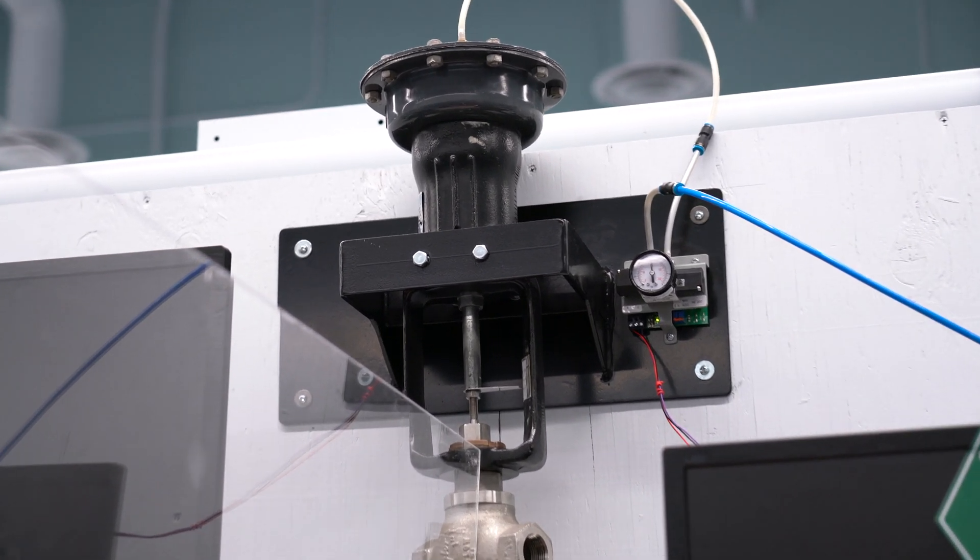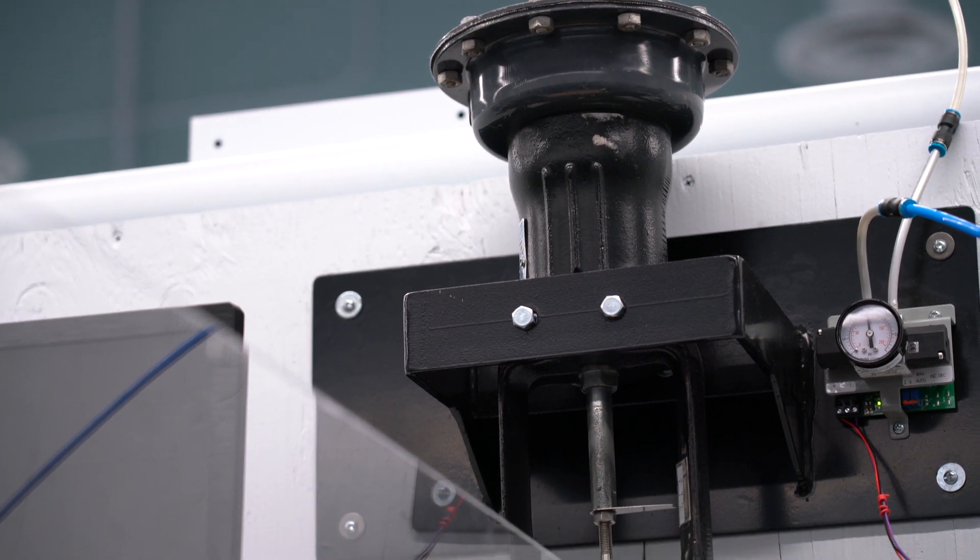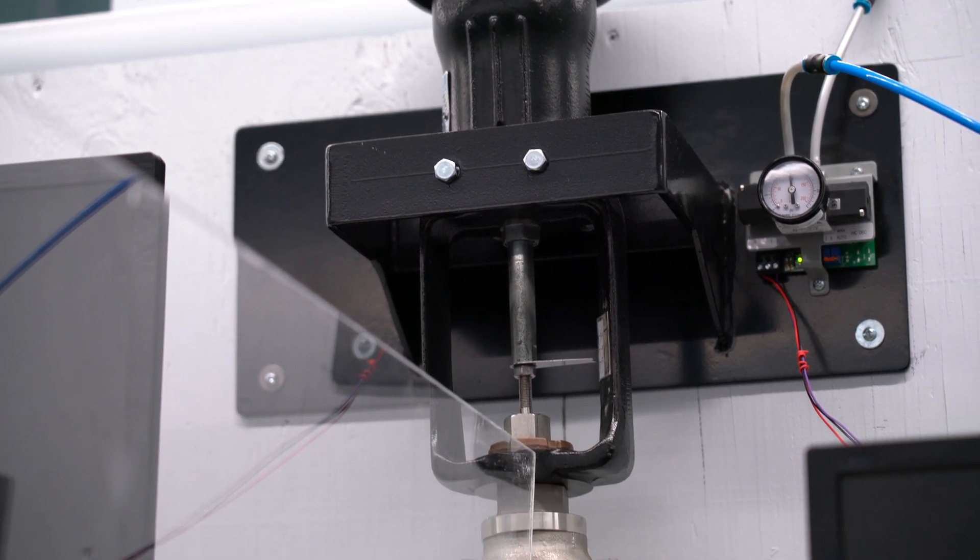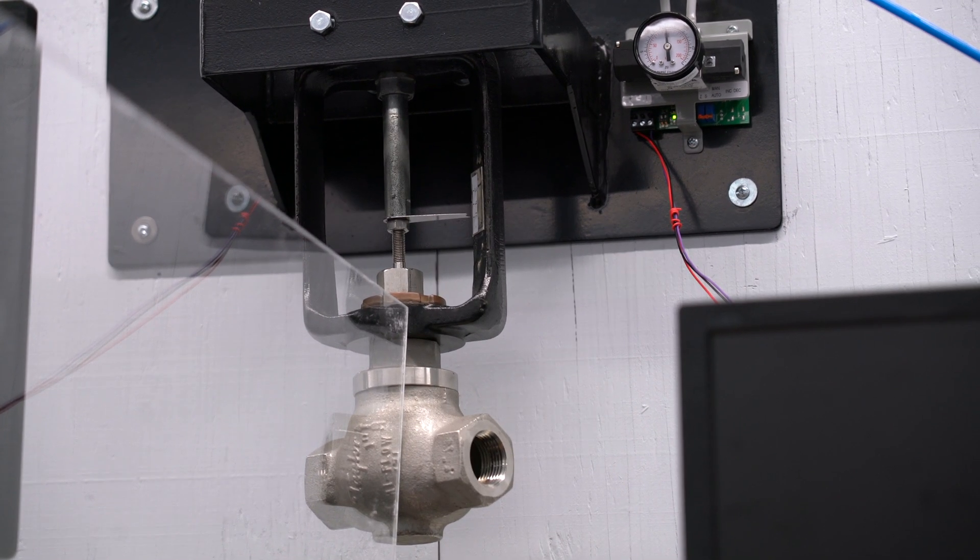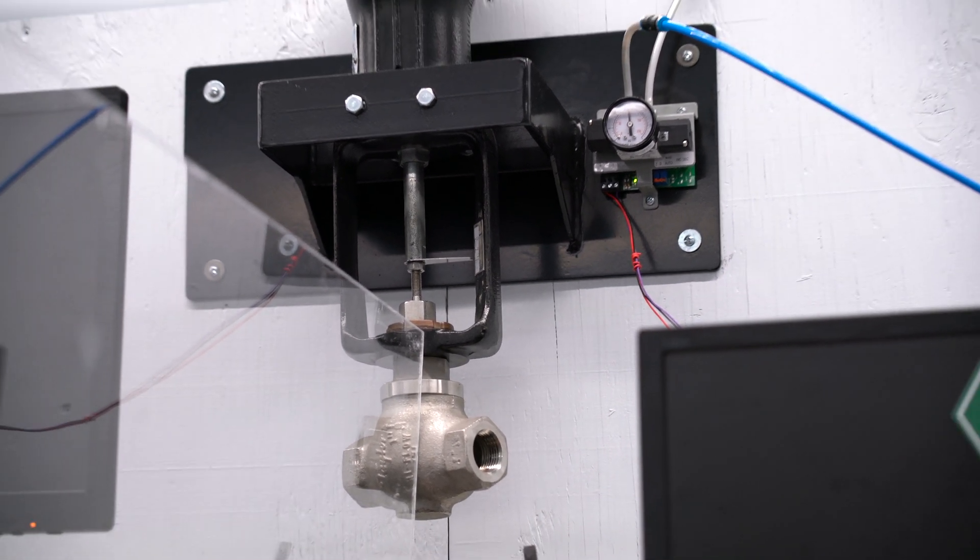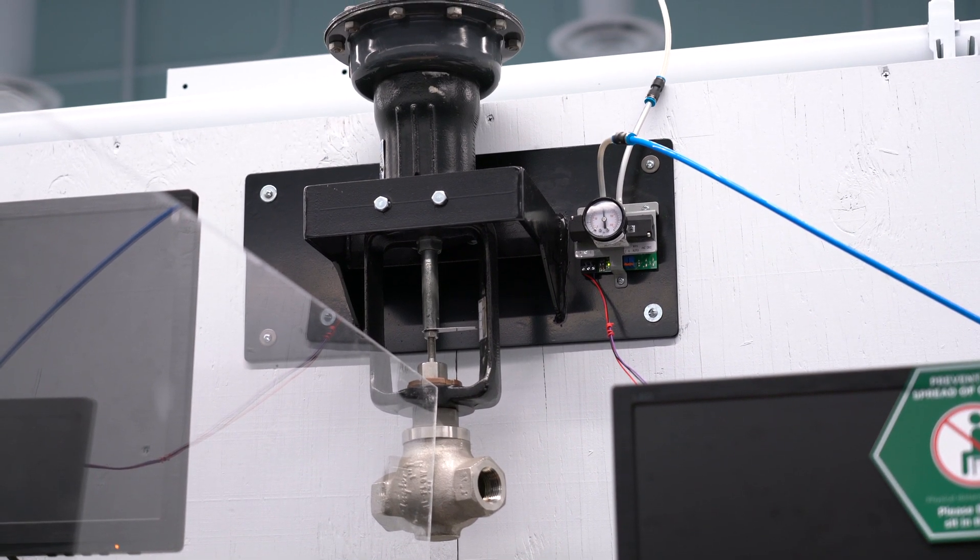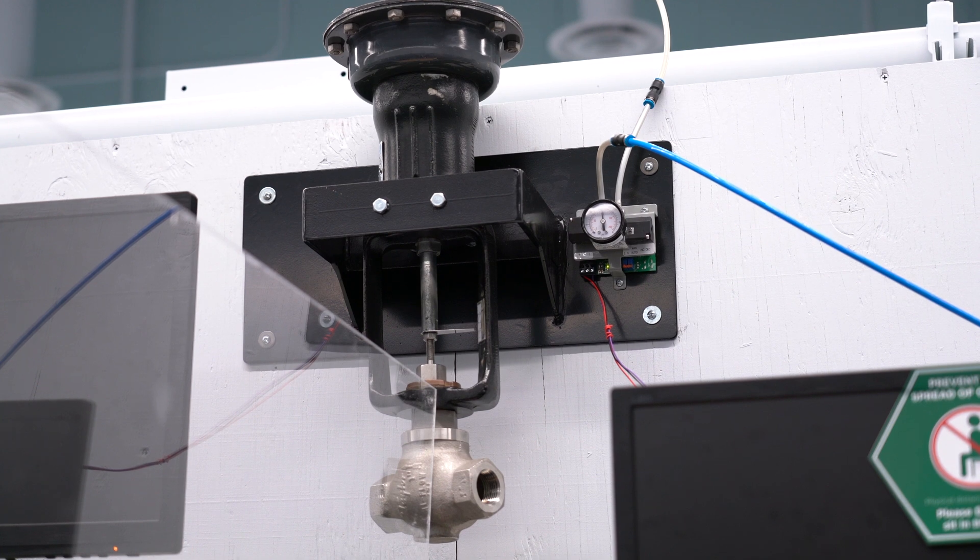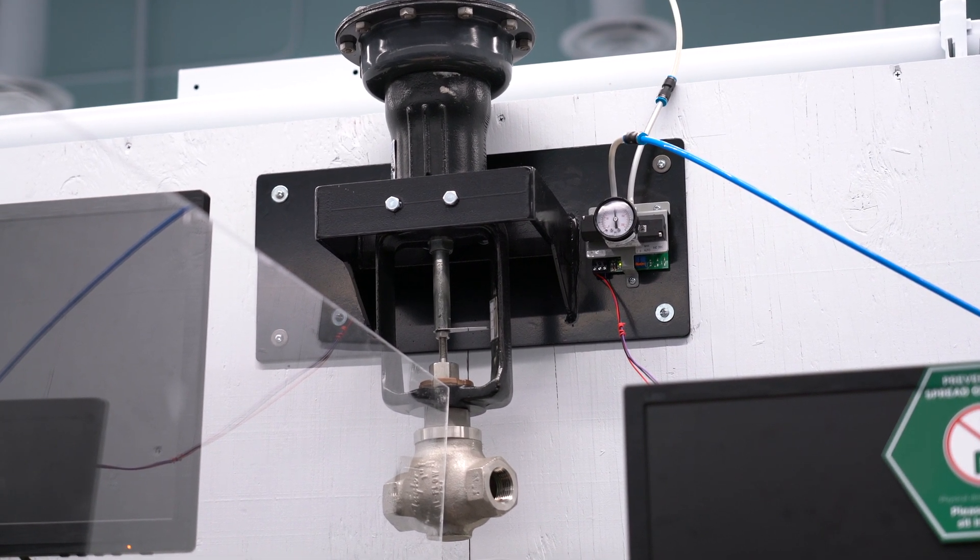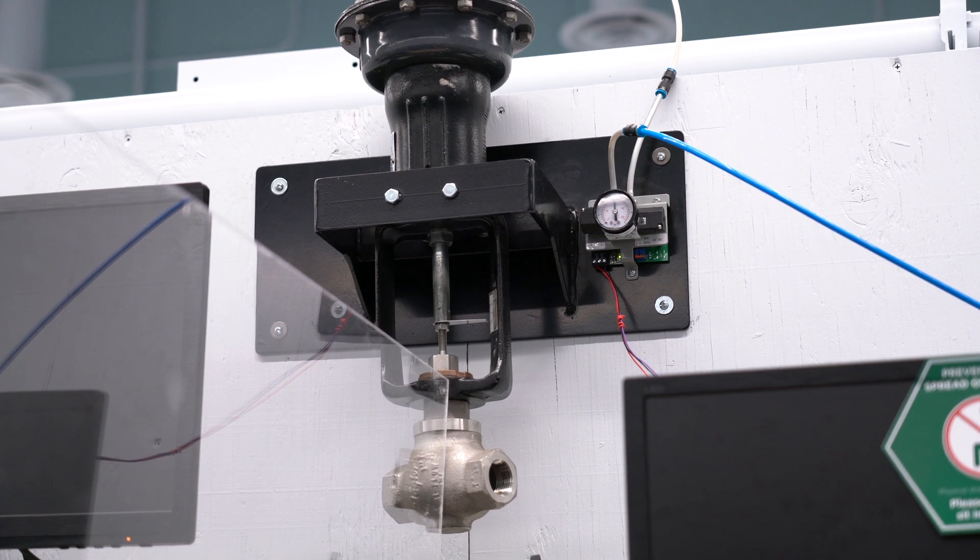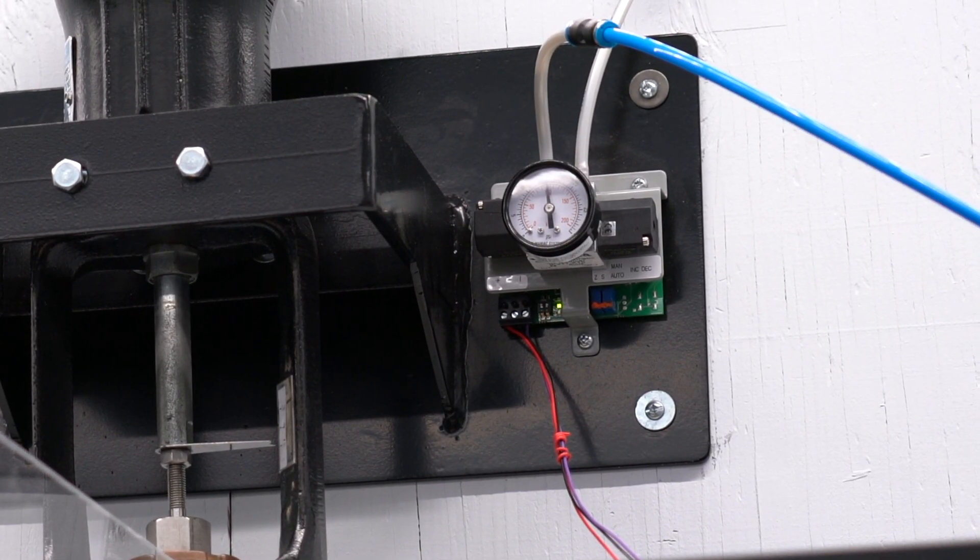Now if we want to control this with a programmable logic controller, we have to convert an analog signal to a pneumatic signal. So that's what this little device to the right is doing. It's called an electro-pneumatic transducer. It converts an electrical signal to a pneumatic signal, and the electrical signal range is 0 to 10 volts, and it converts it to a pressure in the range of 3 to 15 psi.